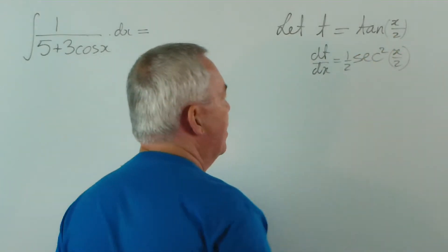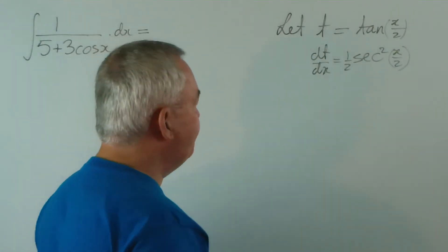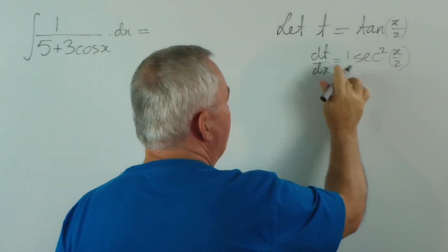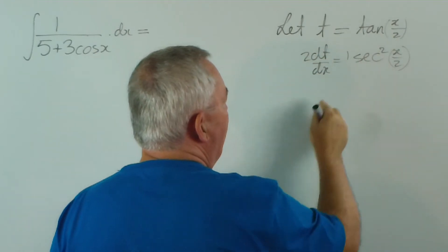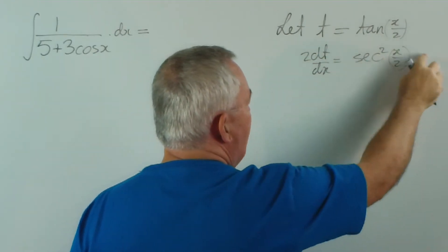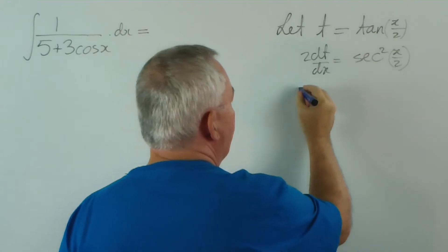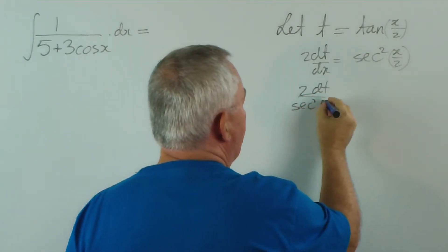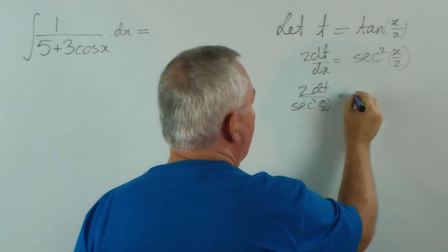Now I can multiply both sides of this by 2 and I can move the dx up here and the sec squared x down. So I get 2dt over sec squared (x/2) equals dx.